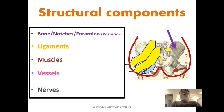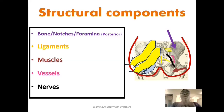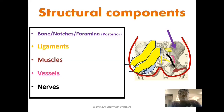We also have a number of vessels and nerves positioned within the gluteal region, as shown in this image. We are going to be taking each of these structural components one after the other, explaining how they run and are finally positioned within the gluteal region.